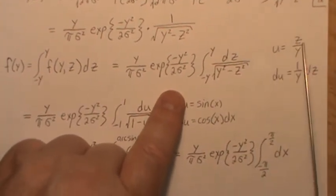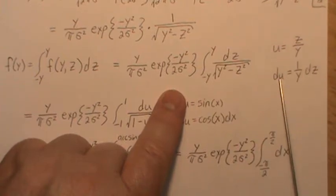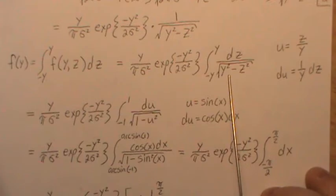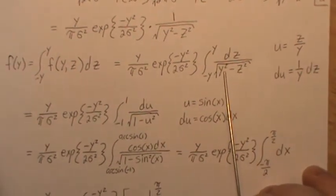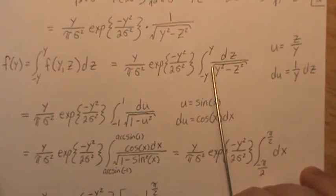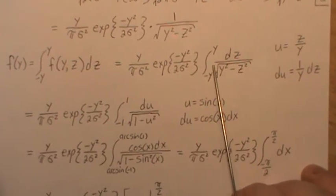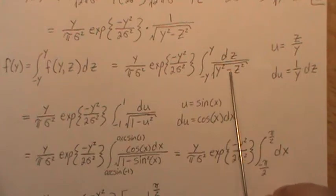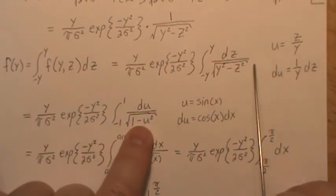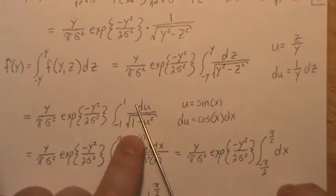So now, let's let U be Z over Y. So then DU is 1 over Y, DZ. So here, and if you think about this, so if we factor out a Y squared and then bring it outside there, it's just Y. So it's DZ over Y. But in here, we have 1 minus Z squared over Y. And so this substitution creates this.